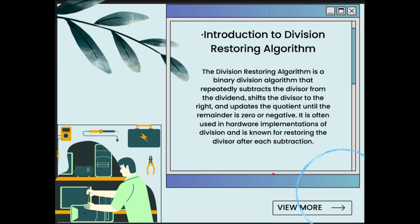Introduction to Division Restoring Algorithm: The Division Restoring Algorithm is a binary division algorithm that repeatedly subtracts the divisor from the dividend, shifts the divisor to the right, and updates the quotient until the remainder is zero or negative. It is often used in hardware implementations of division and is known for restoring the divisor after each subtraction.